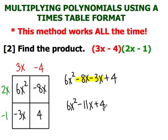Our final solution is 6x squared minus 11x plus 4. So that is the product of 3x minus 4 and 2x minus 1. Hope you found that helpful. Thank you.